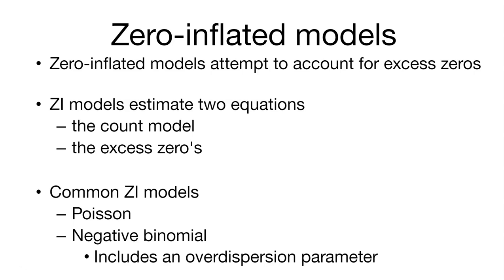Just like we have a Poisson and a negative binomial distribution, we can have a model that fits a zero-inflated Poisson and a zero-inflated negative binomial distribution. And you might remember that that negative binomial also includes an over-dispersion parameter.